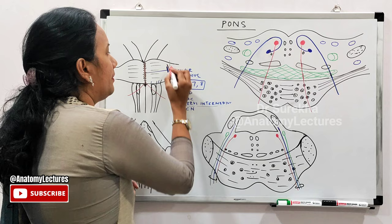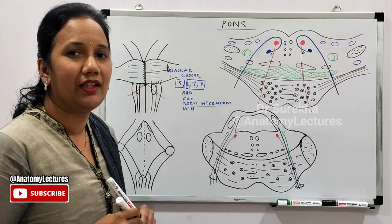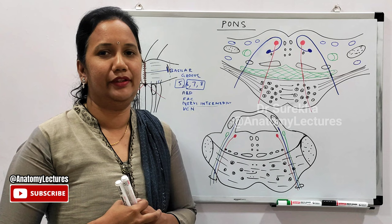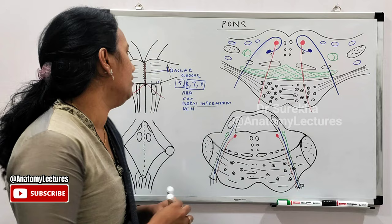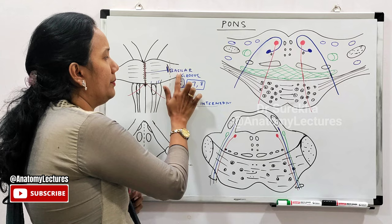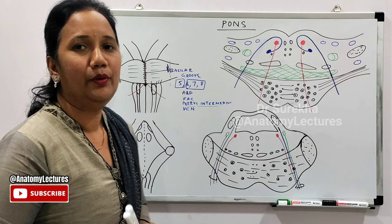The trigeminal nerve emerges at the pontocerebellar junction with two roots: a motor root and a sensory root. The sensory root is larger and thicker compared to the motor root, as the trigeminal nerve is mostly sensory. So cranial nerve 5 emerges at the pontocerebellar junction, while 6, 7, and 8 emerge at the pontomedullary junction.